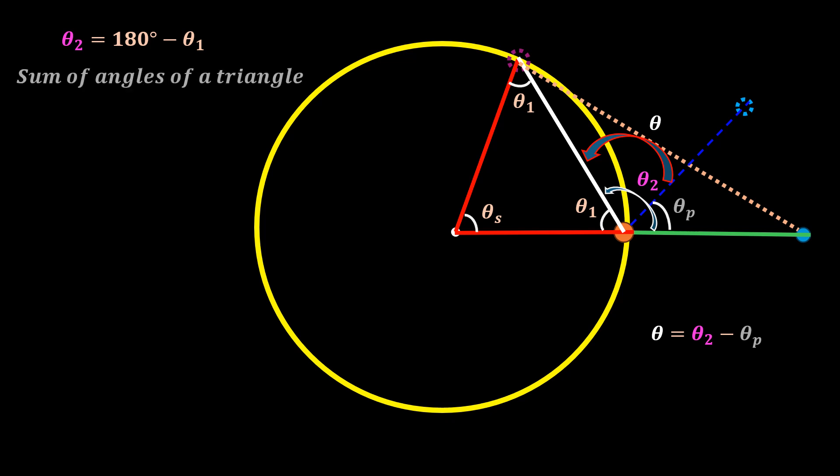The sum of the angles of a triangle is always equal to 180 degrees. So, we have theta 1 plus theta 1 plus theta s equal to 180 degrees. Therefore, theta 1 is equal to 90 minus theta s over 2. Subbing this in the equation of theta 2 yields theta 2 equal to 90 plus theta s over 2.